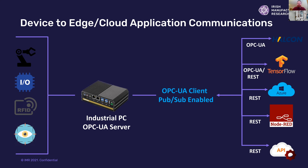By using a publish-and-subscribe mechanism, there is fast communication integration. For example, where there's latency in the sharing of legacy data between devices, the publish-and-subscribe mechanism can be used to extract data from one source and implement it on another. This provides a fast communication interface where clients can subscribe and publish information as needed across an entire stack, enabling communication across a range of industrial implementations.